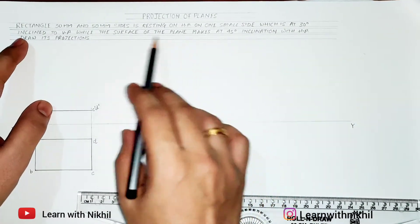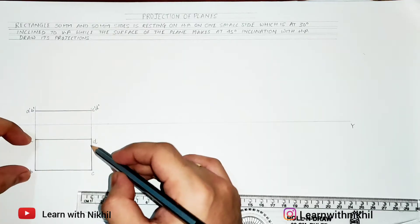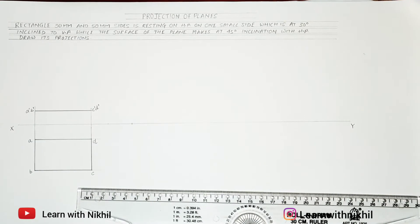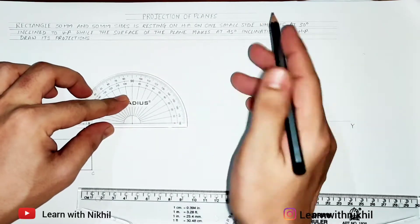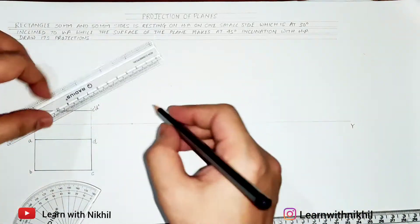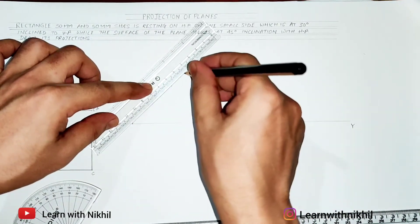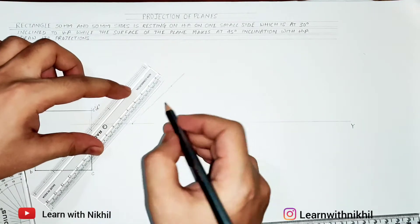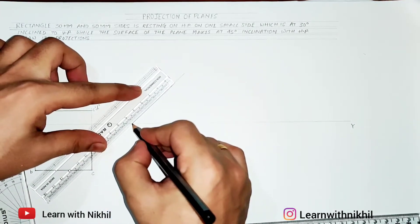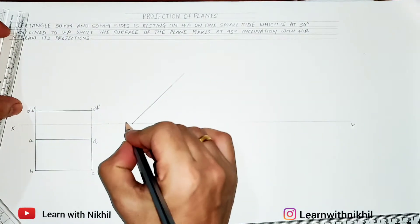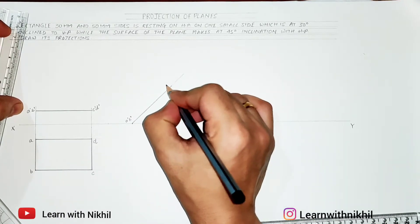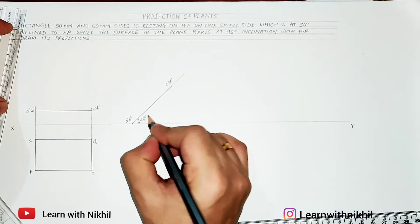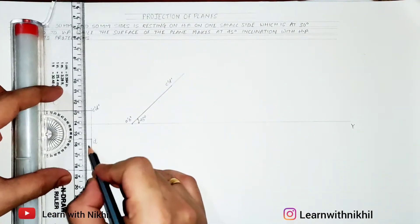Now the surface makes a 45 degree inclination with the horizontal plane, so we have to draw an angle of 45 degrees here. I'll mark a point and draw the 45 degree angle. Next, I'll place the front view line on this 45 degree inclination. You can either directly take the dimension on the scale or use a compass to mark it. This is a-dash, b-dash, c-dash, and d-dash. As one end is resting on the horizontal plane, we draw it accordingly. This gives us the 45 degree angle.